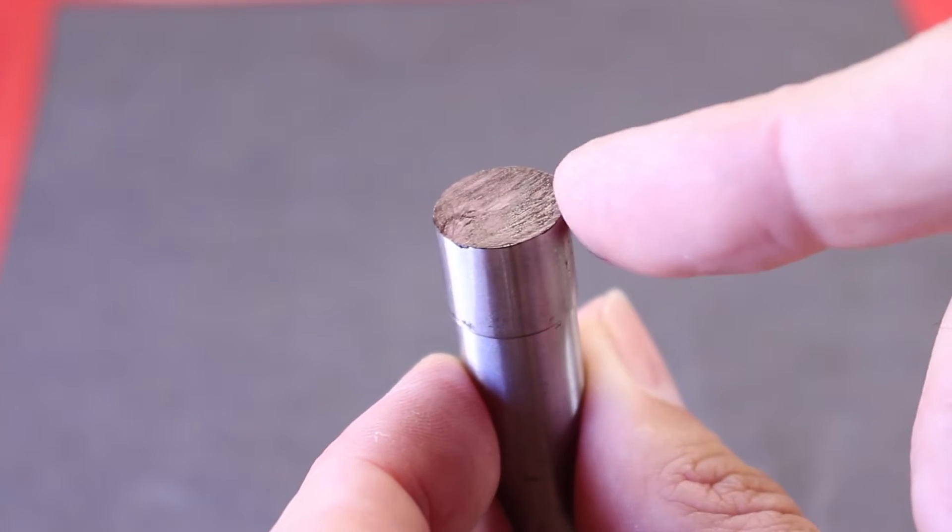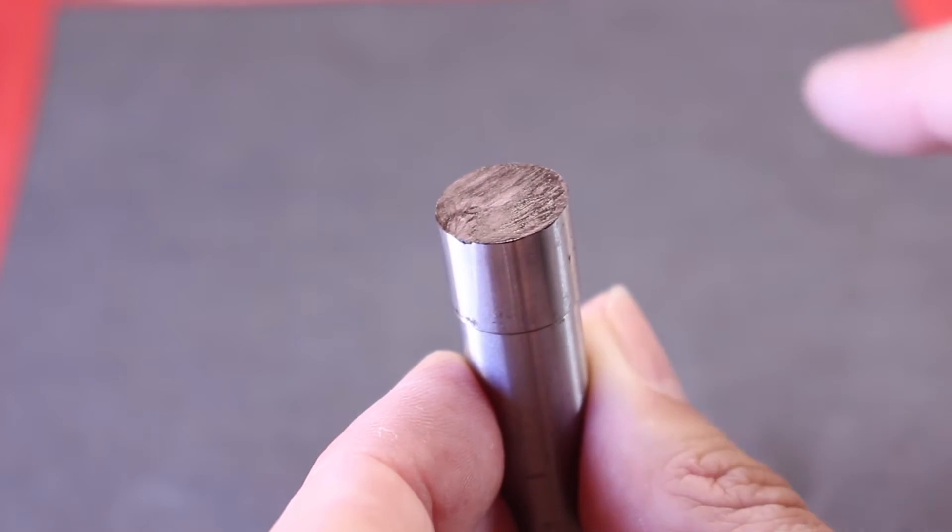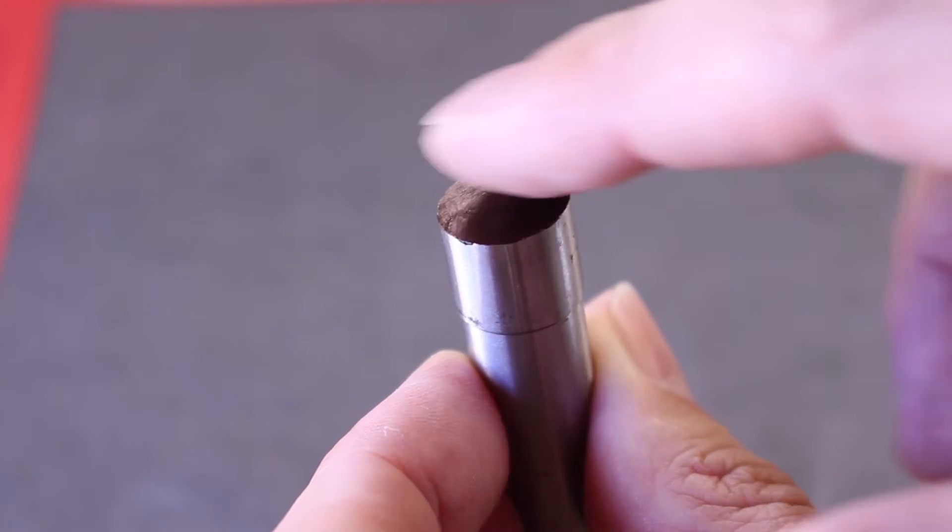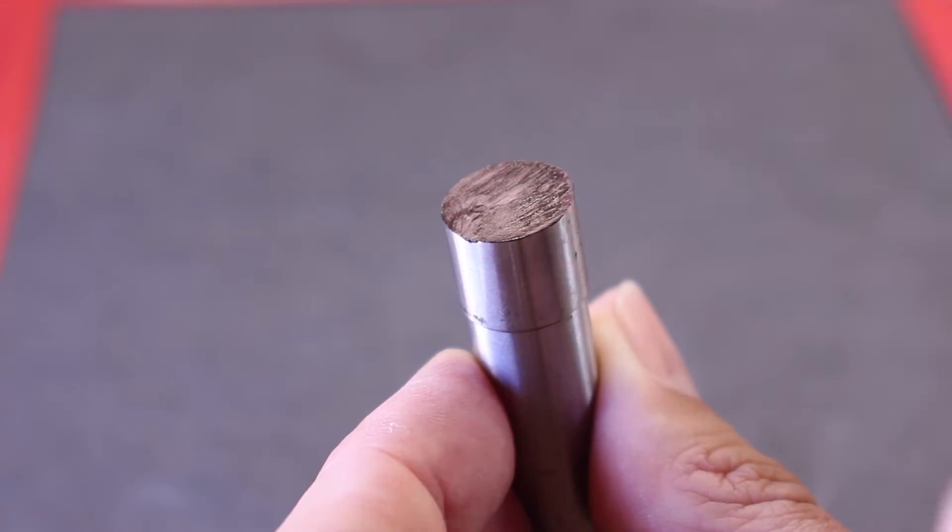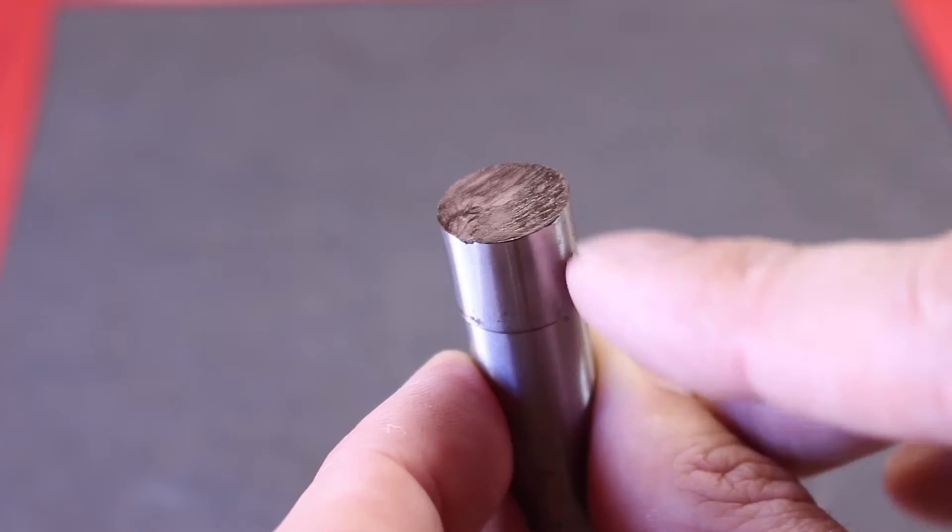The purpose of blackening it is that we're going to sand it, but I'm just going to sand it just enough to remove that black layer. That will show us that we're doing it nice and evenly.